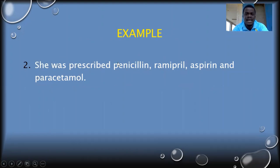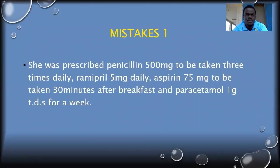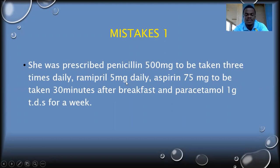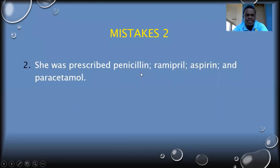Now look at some mistakes that some students make. They write a prescription and use a comma to separate a whole prescription from another when both have a name and dosage — this becomes quite confusing for the reader. On the other hand, some students use a semicolon to separate prescriptions that don't have dosages. This is also wrong.